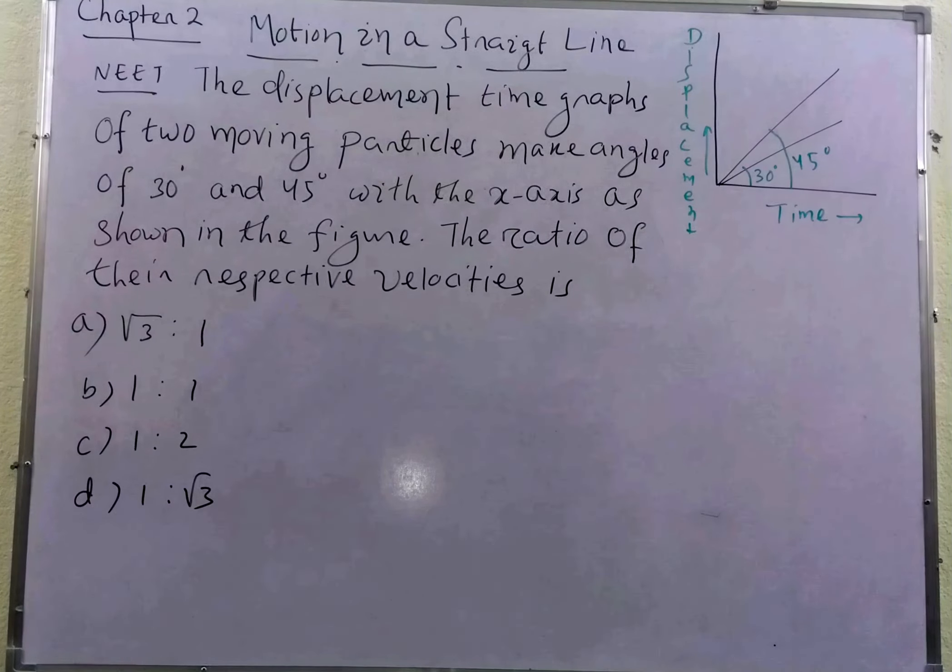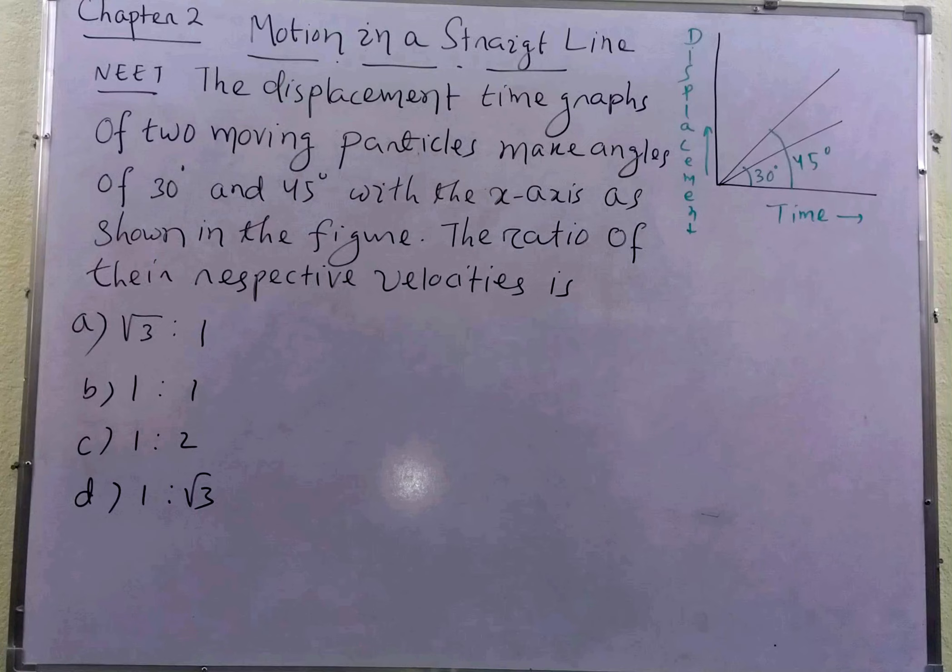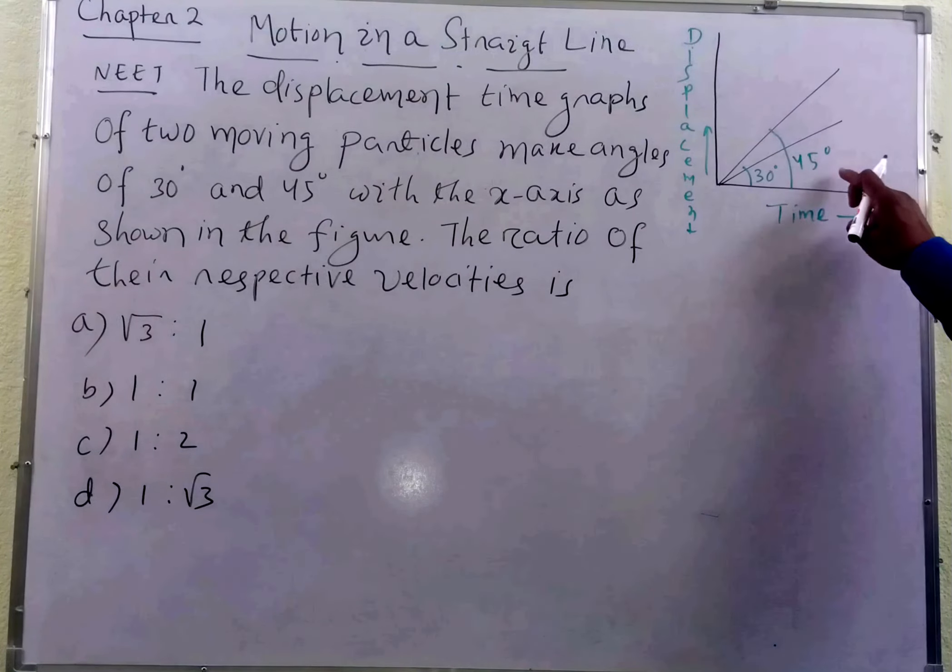As shown in the figure, the ratio of their respective velocities is... Students, do object ka displacement versus time ka graph diya gaya hai. Ek ka angle 30 degree hai, ek ka angle 45 degree hai.